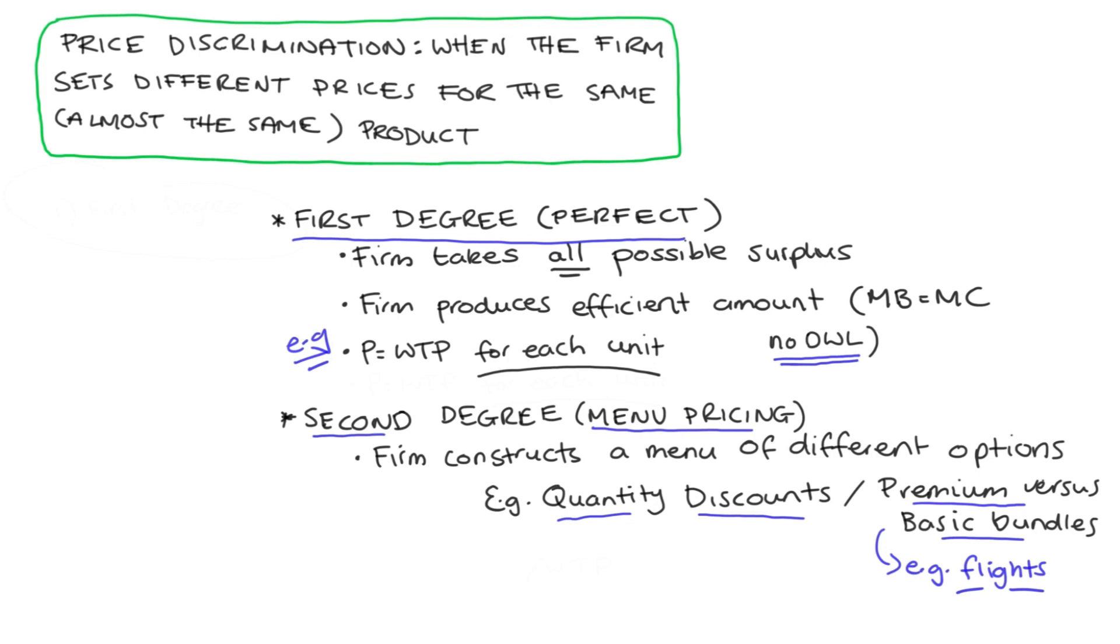Really, the key to second degree price discrimination is the idea that our consumer self-selects into these different groups. And so the challenge for the firm when they are engaging in second degree price discrimination is really how to design their menu options so they successfully discriminate between the groups in their market.